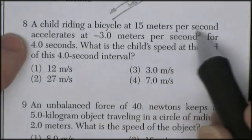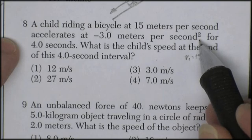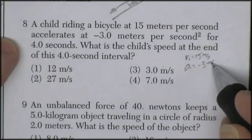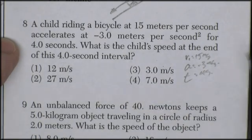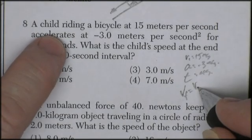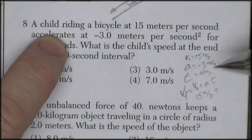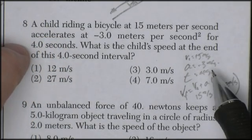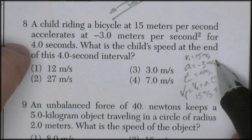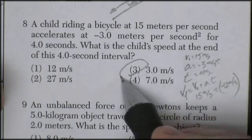Question eight. A child riding a bicycle at 15 meters per second, velocity initial is 15 meters per second, and accelerates at negative three meters per second. So this thing is slowing down. Minus three meters per second. For four seconds, what's the child's speed at the end of this four second interval? Velocity final. Velocity initial plus AT. That works. So velocity initial plus AT. So 15 meters per second, plus negative three times four would be negative 12 meters per second. So in four seconds, accelerating at a negative three meters per second per second, you would change your velocity 12 meters per second. And that would leave you 15 minus 12 at 3 meters per second.